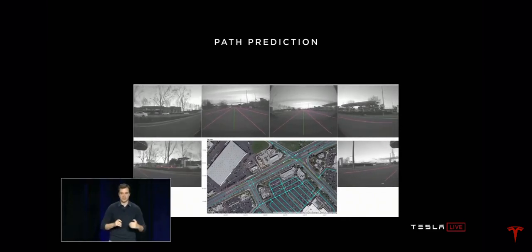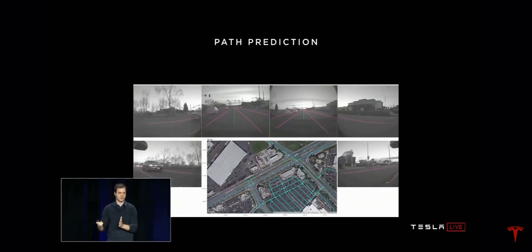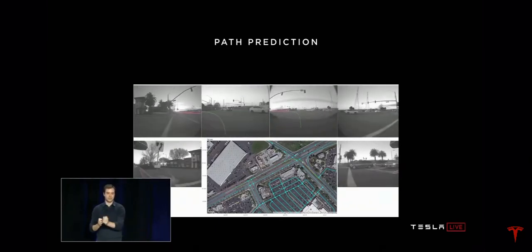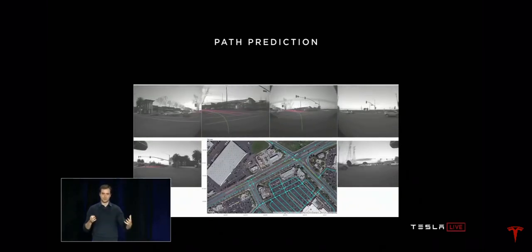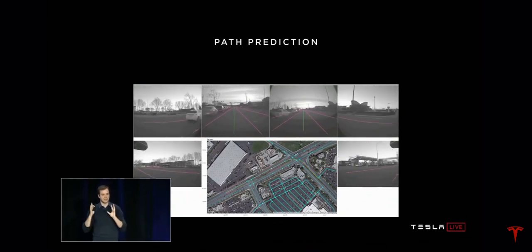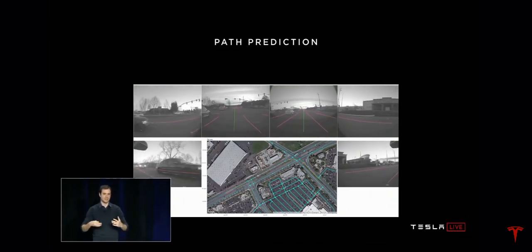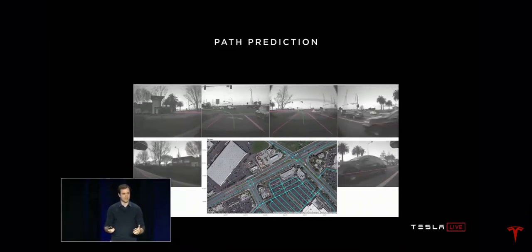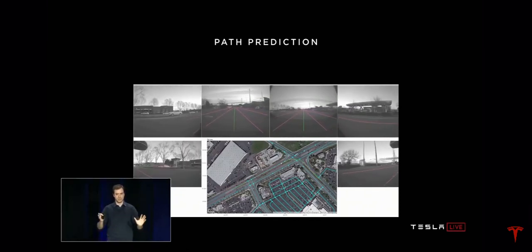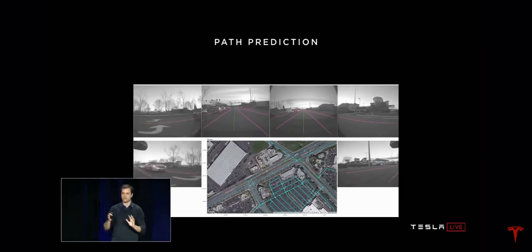We can use this for supervision for the network. We source a lot of this from the fleet, train a neural network on those trajectories, and then the neural network predicts paths just from that data. This is typically referred to as imitation learning — we're taking human trajectories from the real world and trying to imitate how people drive.